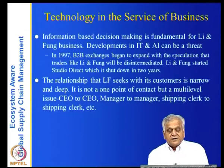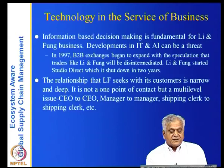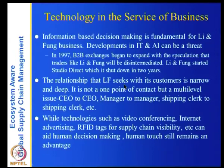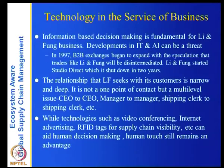The relationship that Li and Fung seeks with its customers is narrow and deep — not one point of contact but a multilevel relationship: CEO to CEO, manager to manager, shipping clerk to shipping clerk. While technology such as video conferencing, internet, RFID tags for supply chain visibility can aid human decision making, the human touch still remains an advantage. Li and Fung also tracks disruptive technologies as they emerge — video conferencing, Wi-Fi, mobile — and updates itself accordingly.